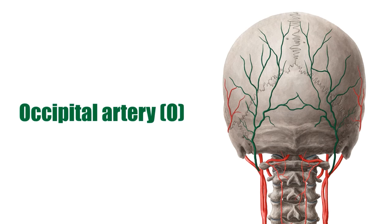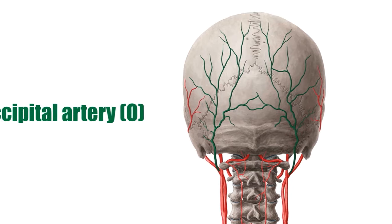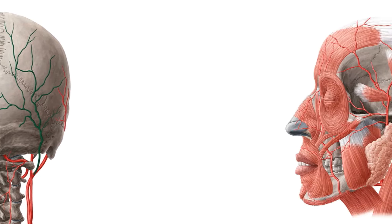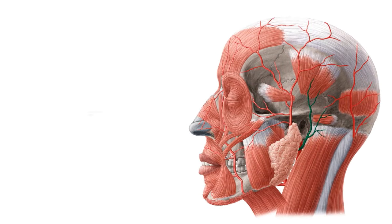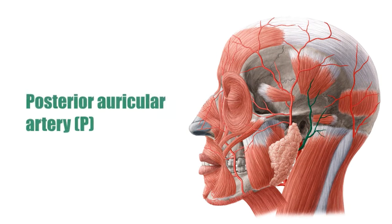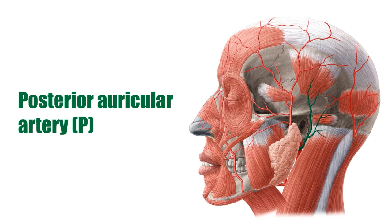Next we have the posterior auricular artery, which supplies the adjacent musculature, the parotid gland, the facial nerve (also known as cranial nerve seven), the ear, and the scalp.